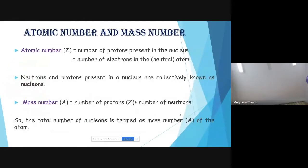From Rutherford's model we know that protons and neutrons reside inside the nucleus and electrons are outside the nucleus. Based on this, we define the atomic number, represented as Z. The atomic number Z is defined as the number of protons present in the nucleus.